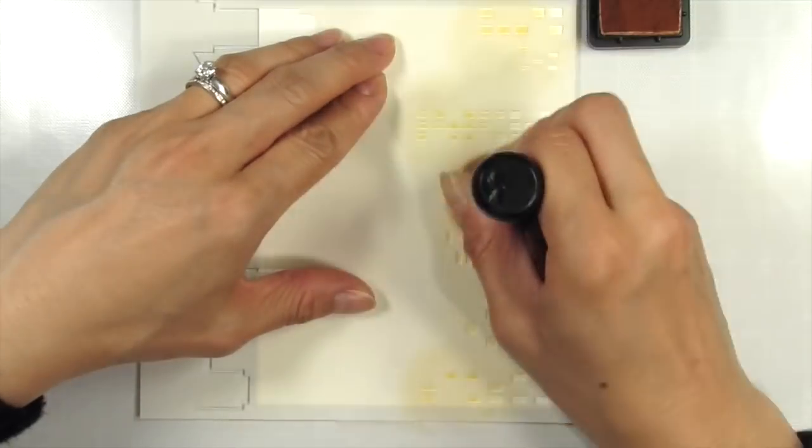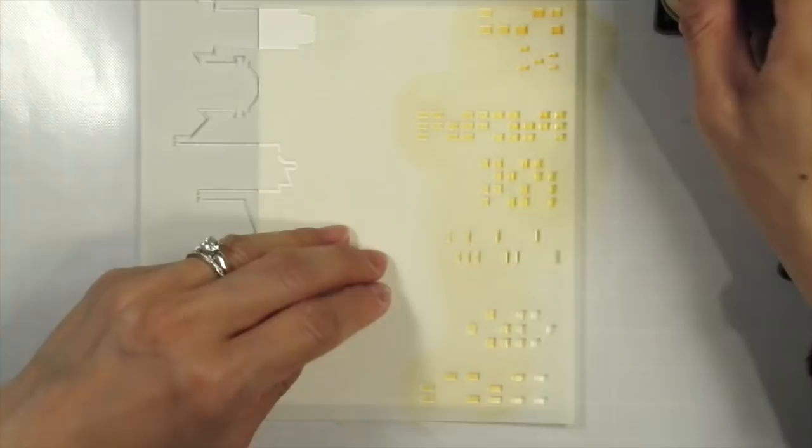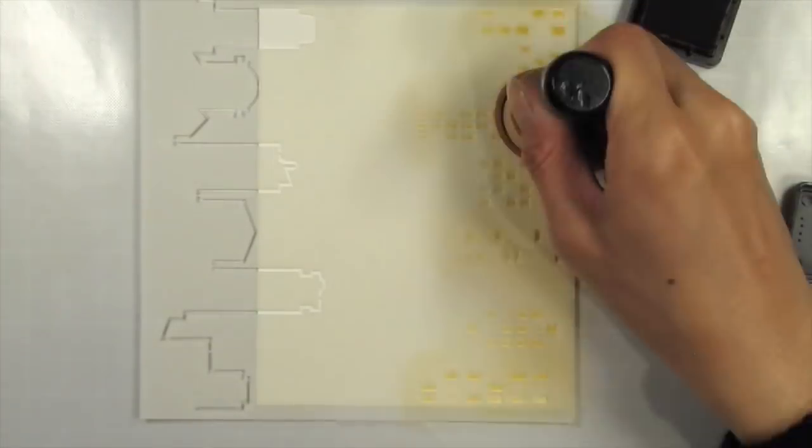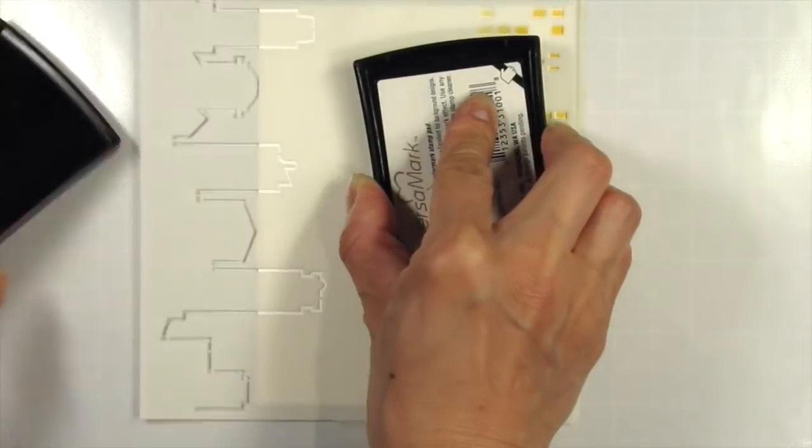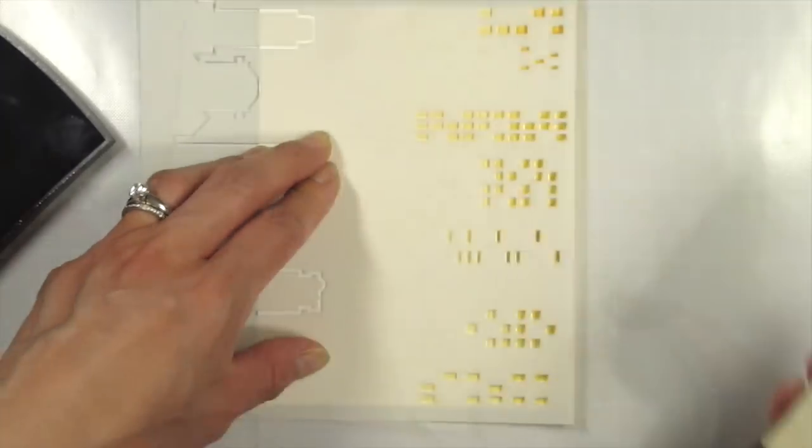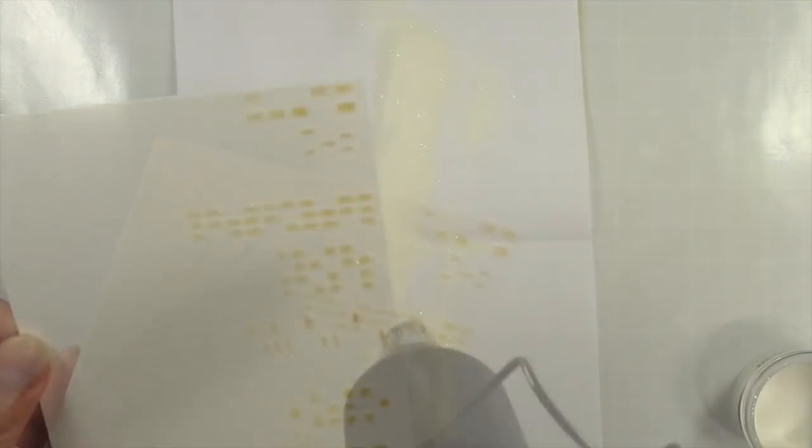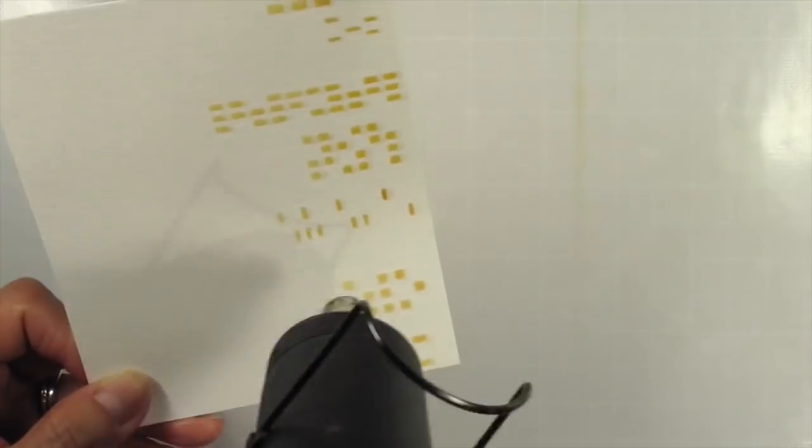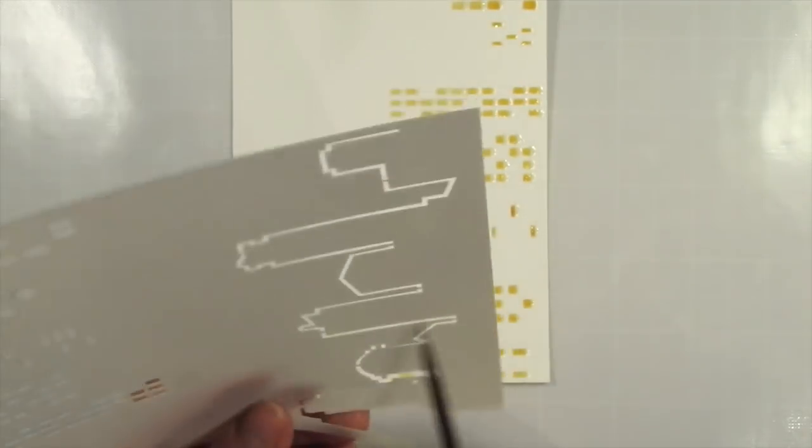Thinking ahead to how I would use the other side of this stencil to create the buildings, I knew that sponging over top of the windows would alter or cover the yellow color so I decided to press my Versamark watercolor ink pad over top of those windows and heat emboss it. That way when I stencil the buildings the ink slides right over the embossed windows.